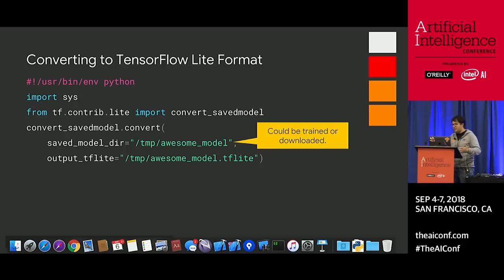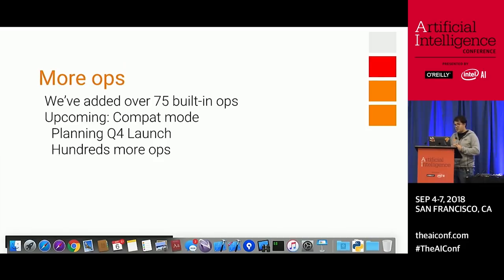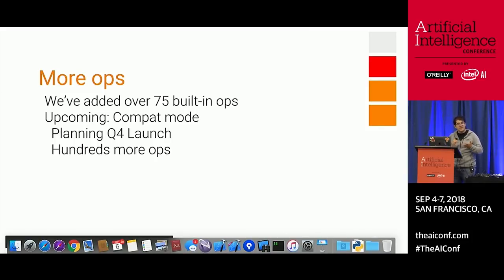Sometimes the conversion won't work because we don't have all the ops. To address this, we've provided visualizers so you can understand your models better — they're analogous to TensorBoard. We've also added 75 built-in ops. We're also announcing a new feature that will allow us to run TensorFlow kernels inside TensorFlow Lite, so you can run normal TensorFlow kernels we don't have a built-in op for. There is a trade-off: it increases binary size considerably. However, it's a great way to get started if binary size is not your primary constraint.